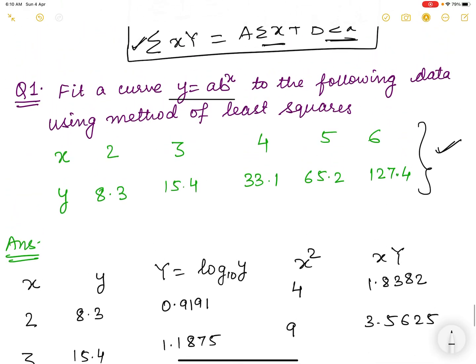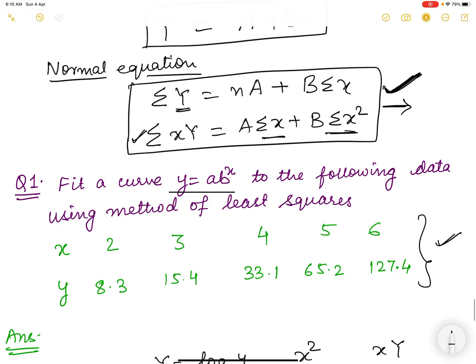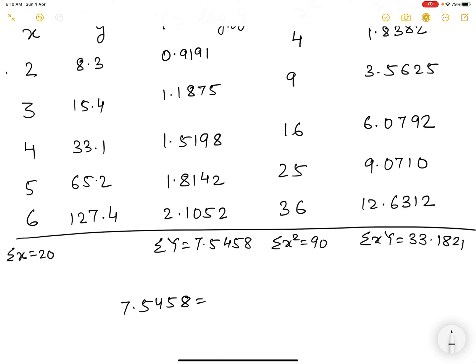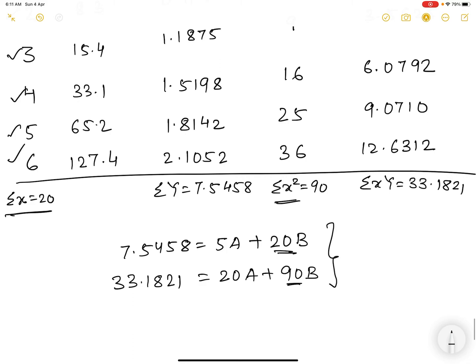Now we have to put all the values in this normal equation. Let us put all the values in this equation. I am putting the values in the equation. So it is 7.5458 equals, let us see how many values are there, what is n? 1, 2, 3, 4, and 5. So I am writing the value of n as 5A plus 20B because sigma x is 20. And now small x into capital Y is 33.1821. And it is 20A plus 90B which is x square. So there are two equations and two unknowns.